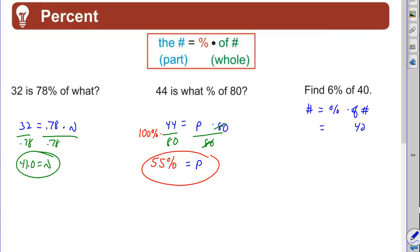40 is obviously the of number. Six percent—be careful—.06. I see students wanting to say .6. That's 60. Six percent is .06. Straight multiplication from here.